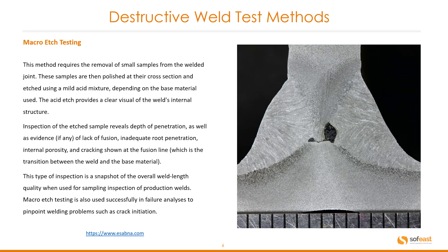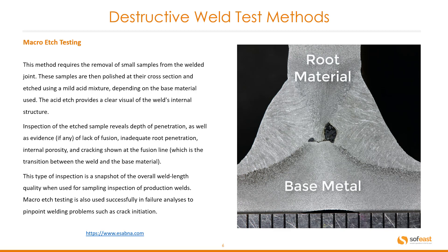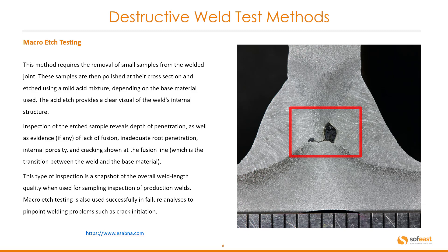This type of inspection is a snapshot of the overall weld length quality when used for sampling inspection of production welds. Macro etch testing is also used successfully in failure analysis to pinpoint welding problems such as crack initiation. Here is a very good sample of macro etch testing where you can see the weld, the root material, the base metal, and some sort of inclusion around the middle.